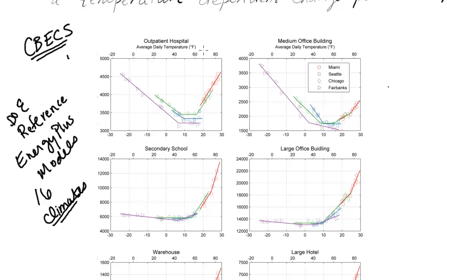And so I think this outpatient hospital shows my point very, very clearly. So you see there's four different data point styles. You have a red circle, a blue square, green, diamond, and a purple triangle.